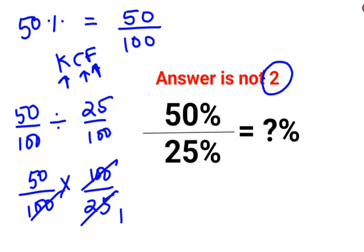So this and this gets cancelled, this is 1 and 2. Yes, the answer is supposed to be 2.